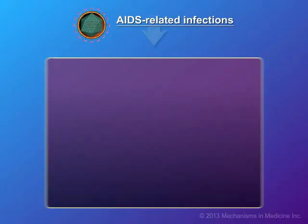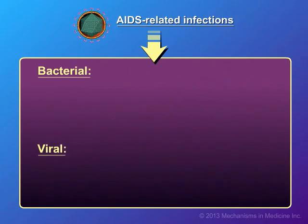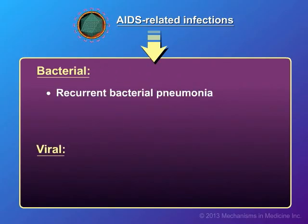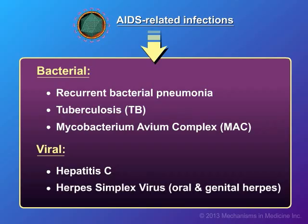Other AIDS-related infections include bacterial infections and viral infections. Bacterial infections include recurrent bacterial pneumonia, tuberculosis or TB, and Mycobacterium avium complex or MAC. Viral infections include hepatitis C and herpes simplex virus, or oral and genital herpes.